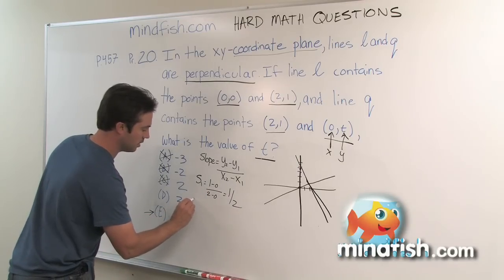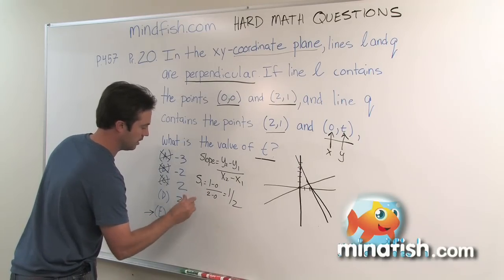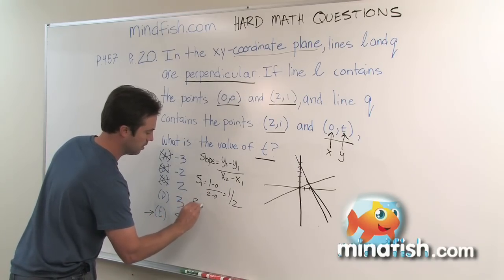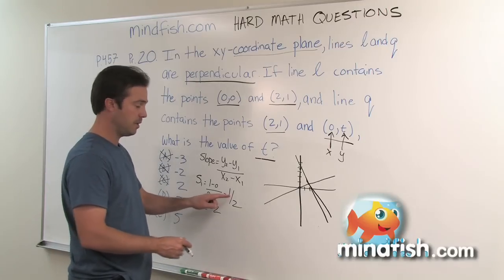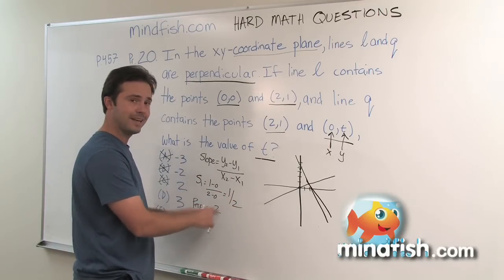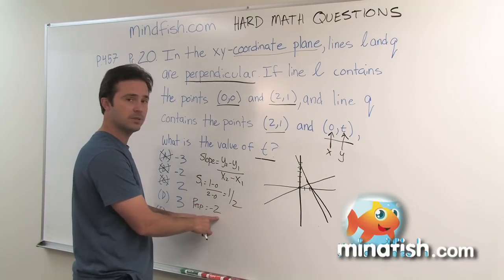Now the perpendicular slope, so basically the perpendicular slope to this slope, is going to be negative two and I get that by flipping it taking the reciprocal so two over one and then negating it, aka the opposite reciprocal.